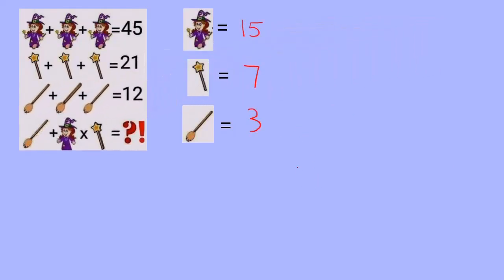All right, so we've solved for a witch, a wand, and a broom. And notice the witch, they're talking about a witch with everything. All right, so now let's take a look at the final equation.